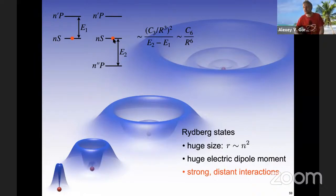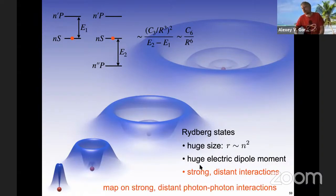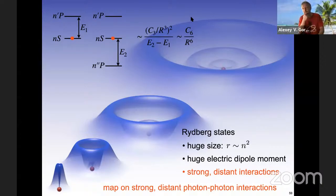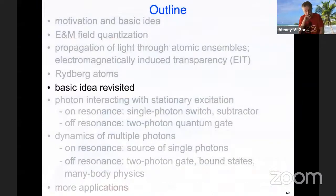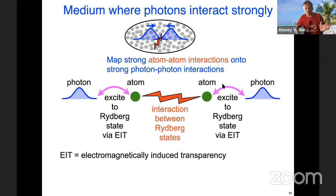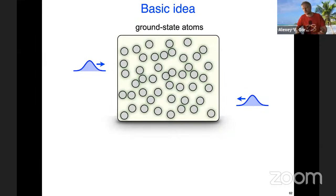Our goal for this lecture is to figure out how we can map these very strong atom-atom interactions — with this huge coefficient C6 — into strong distant photon-photon interactions. In Antoine's talk you heard how to make strong interactions useful for information processing with atoms; now we want to take advantage of this to get strong interactions between photons as well. This is going to be very cartoony at first, just to get you the basic idea, and then we'll get into some formulas.